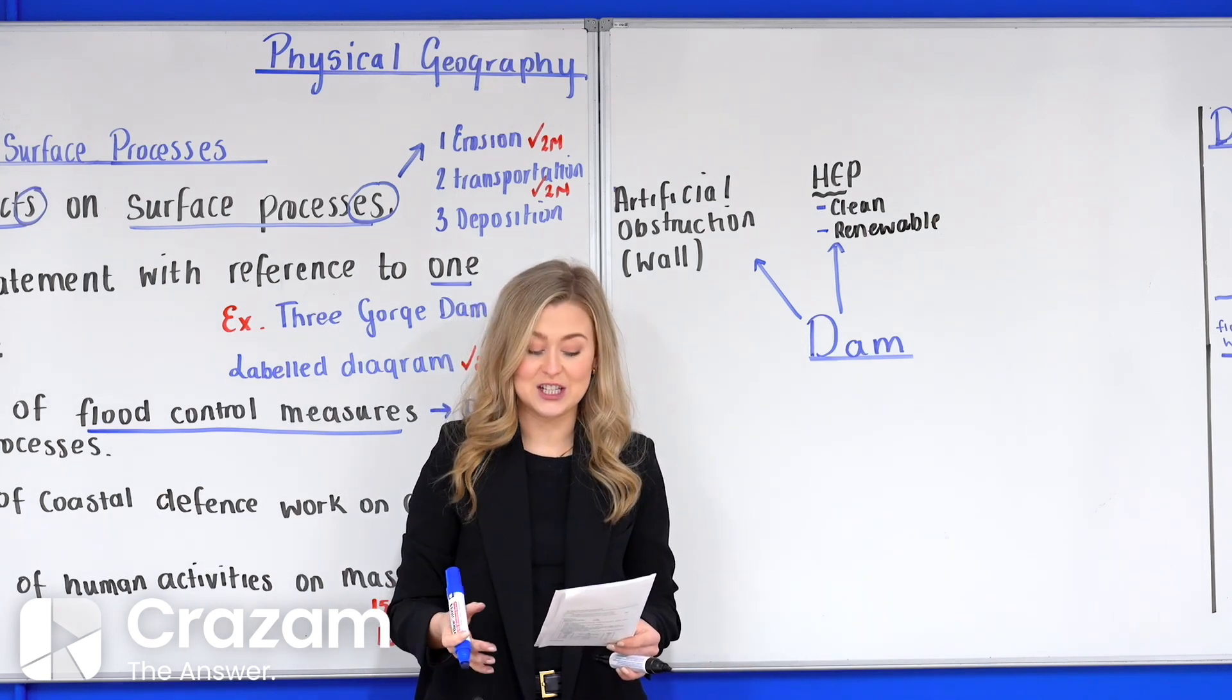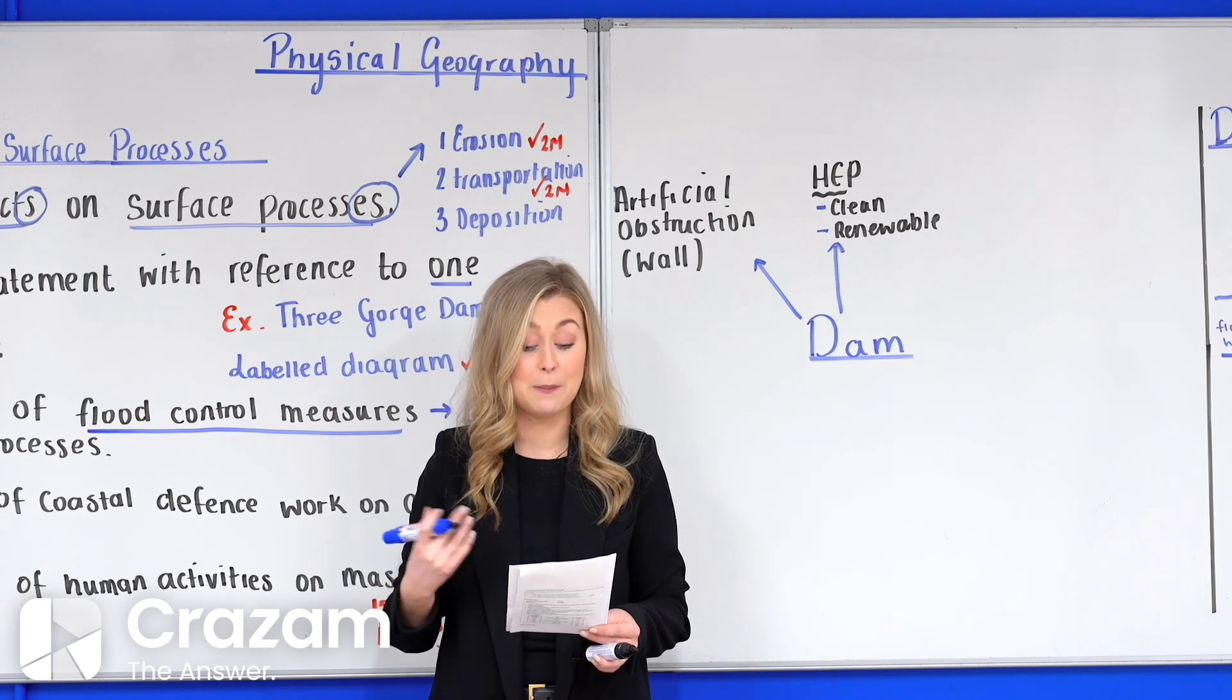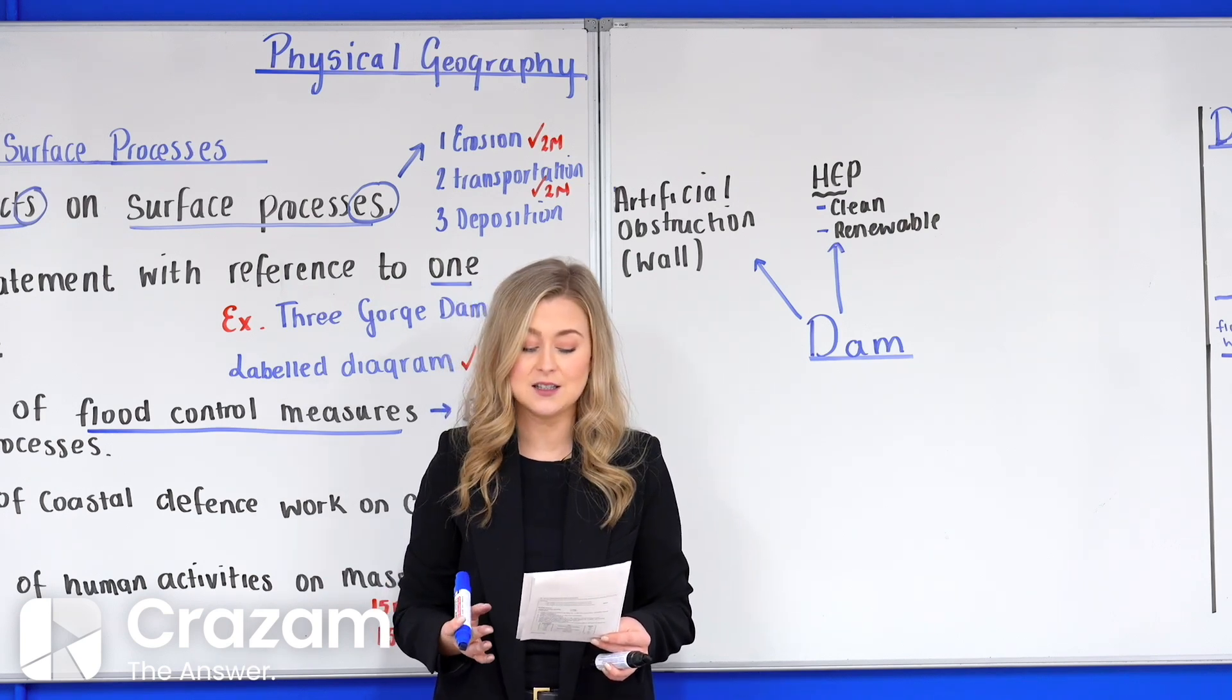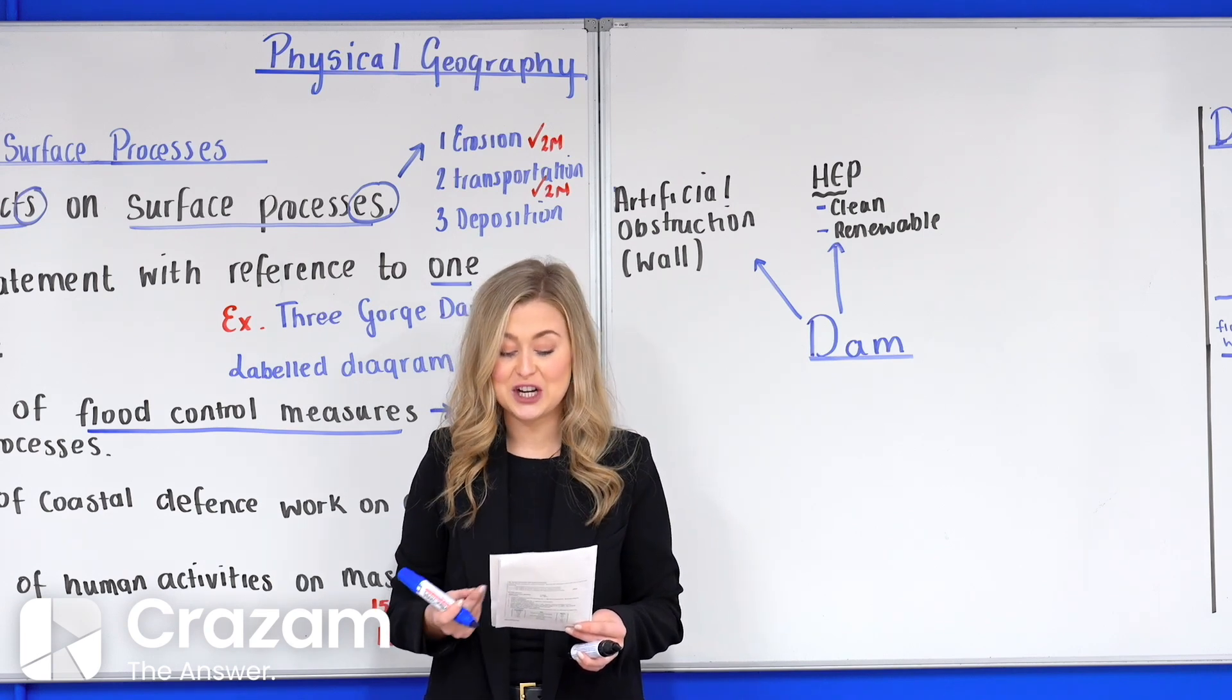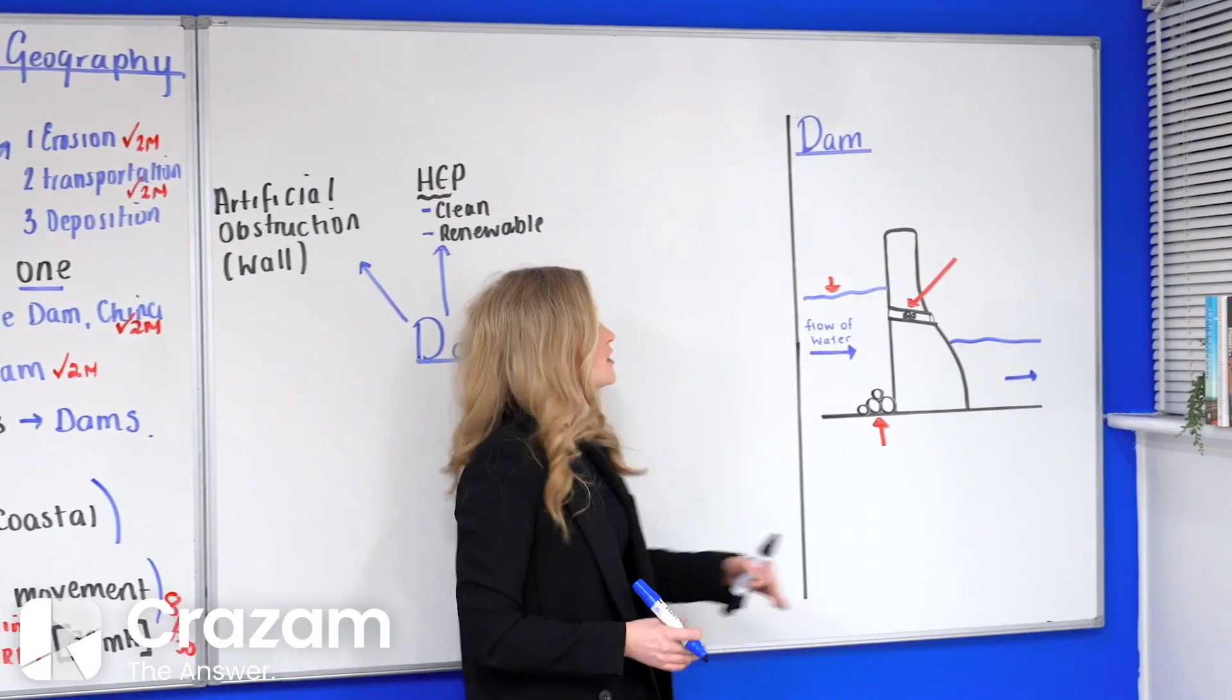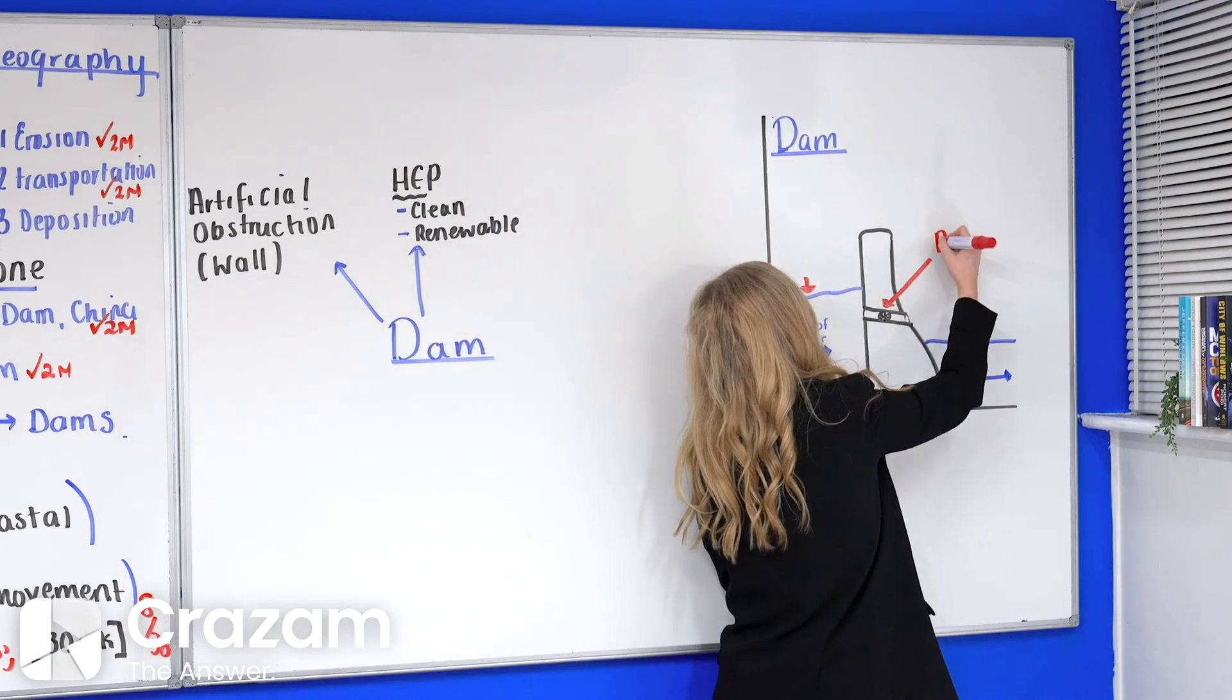Hydroelectric power is generated from the potential energy of water flowing downstream. The water flows through pipes in the dam known as pinstocks. The flow of the water turns the turbines within the pinstocks which is connected to a generator. The water spins the turbines to generate electricity for nearby urban areas.